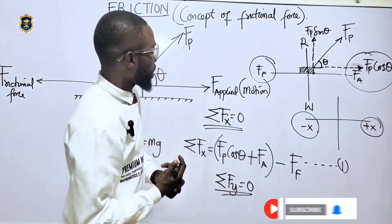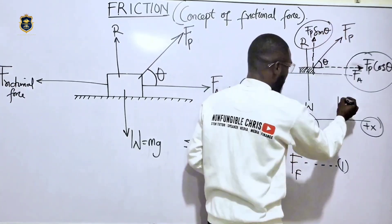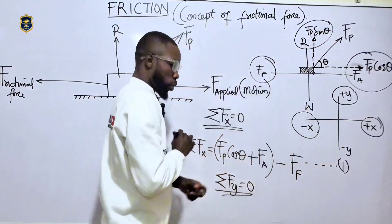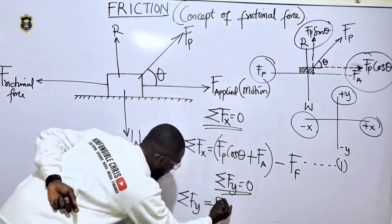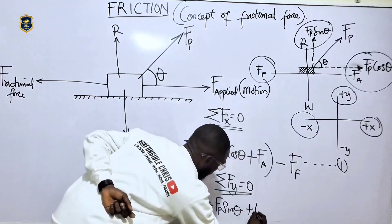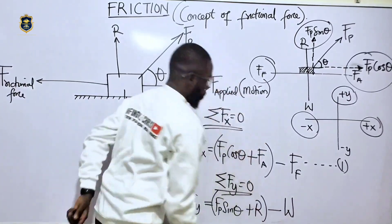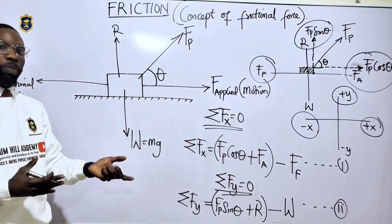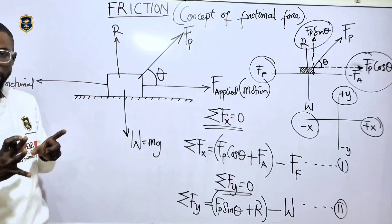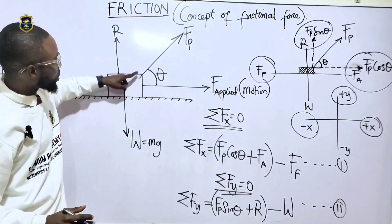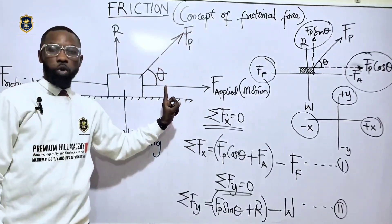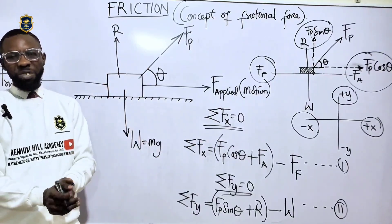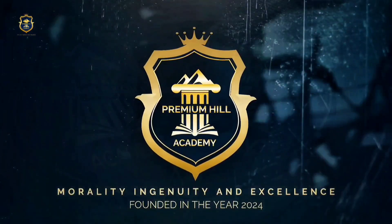For the y-axis, ΣF_y = 0. We have two forces in the vertical direction: F_p sin theta plus the normal reaction (N) minus the weight (W). So ΣF_y = F_p sin theta + N − W. This becomes equation two. Please note these equations down, as we'll be using them to solve questions.